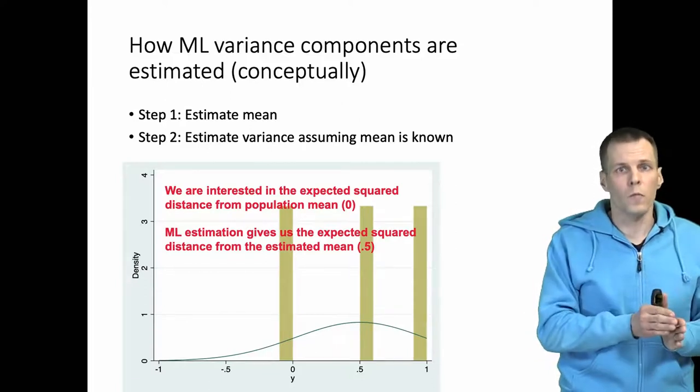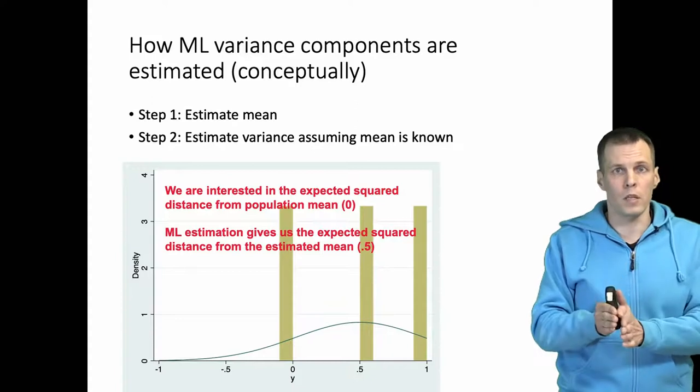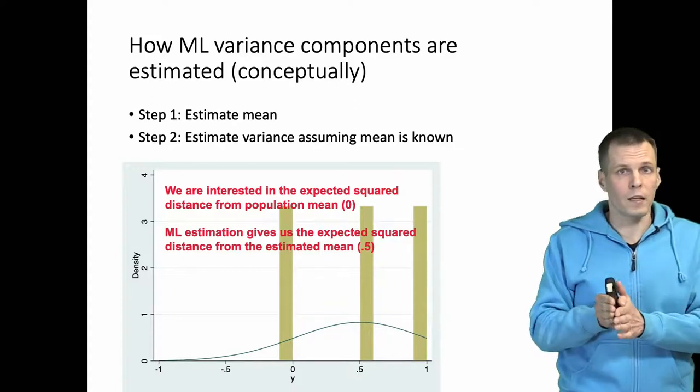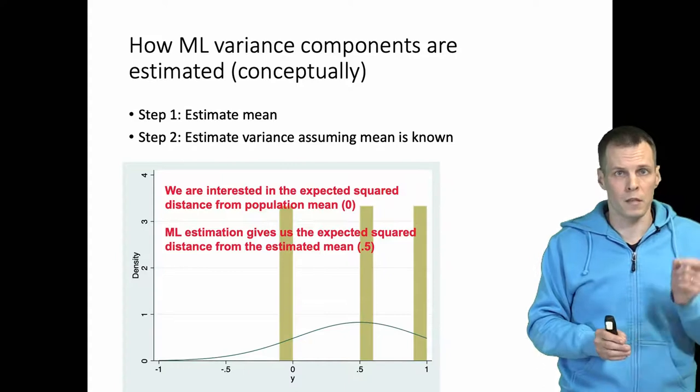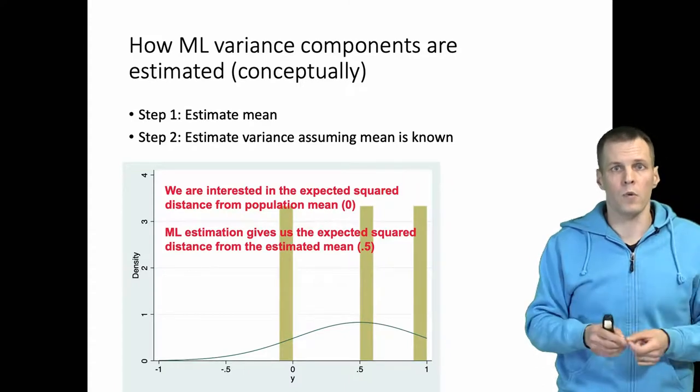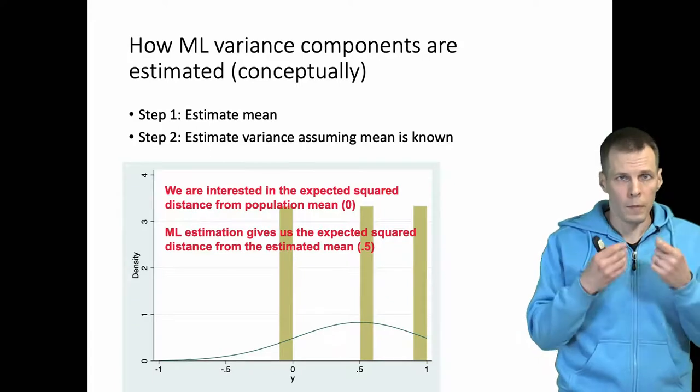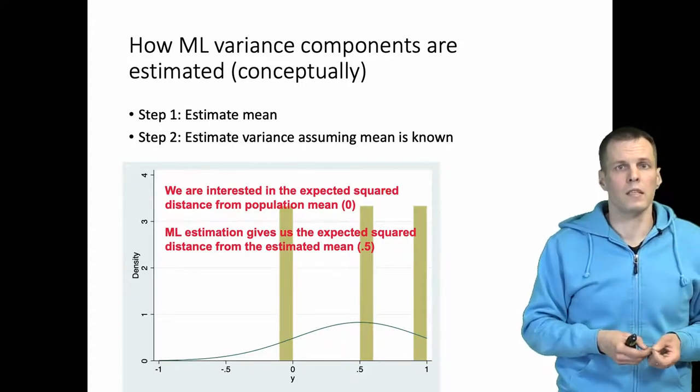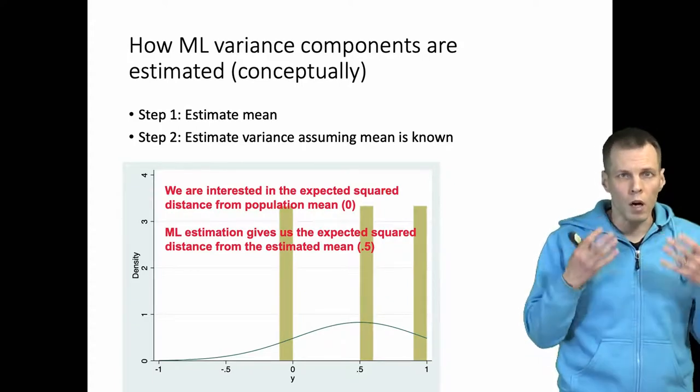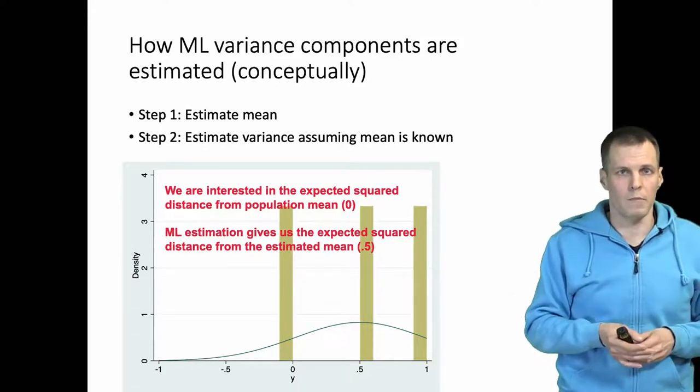If we take the maximum likelihood approach, then we first calculate the mean which is six, and then we take the difference from the mean which is minus one, zero, and plus one. When we square, we get less than one. So the problem with maximum likelihood estimates is that it doesn't take into account the degrees of freedom that we lose when we estimate the mean.